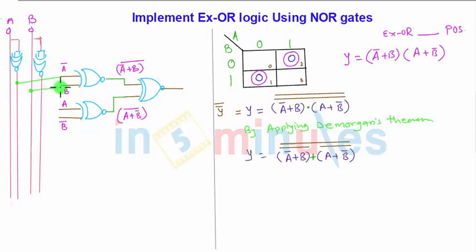A is connected to A and B bar is connected to B. This is how you will get here the equation Y which is nothing but XOR logic.